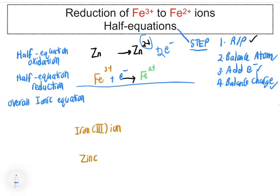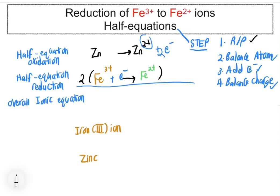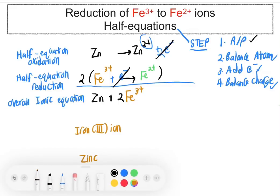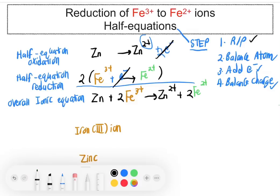Next, combine both equations to write the overall ionic equation. The electrons must be equal for both half equations. For zinc the electron count is 2, so for Fe the electron count must also be 2 — we multiply the Fe equation by 2 so the electrons cancel out. This means zinc donates 2 electrons and those 2 electrons are accepted by Fe3+. The overall ionic equation is: Zn + 2Fe3+ → Zn2+ + 2Fe2+.